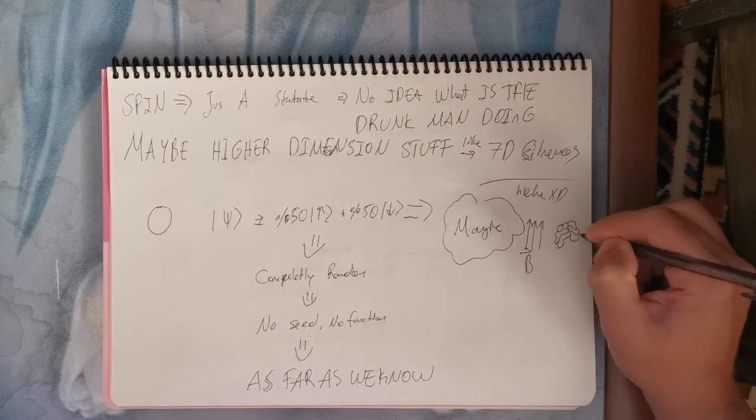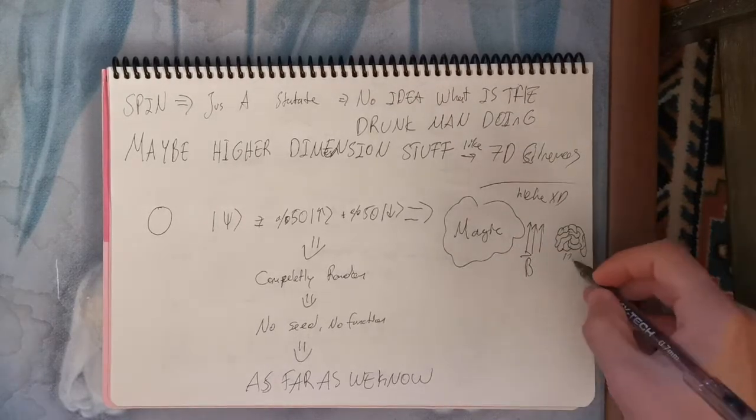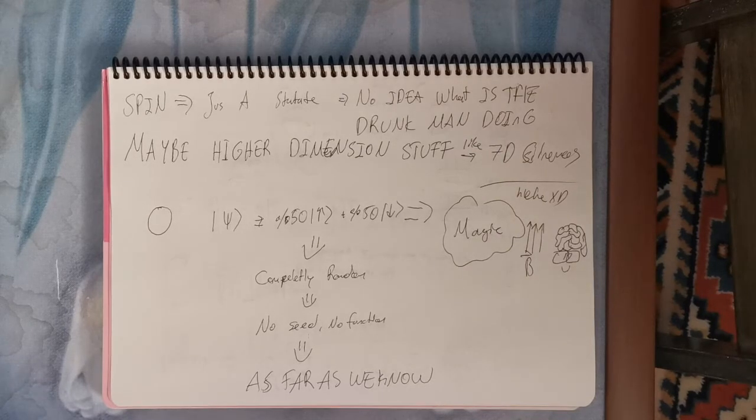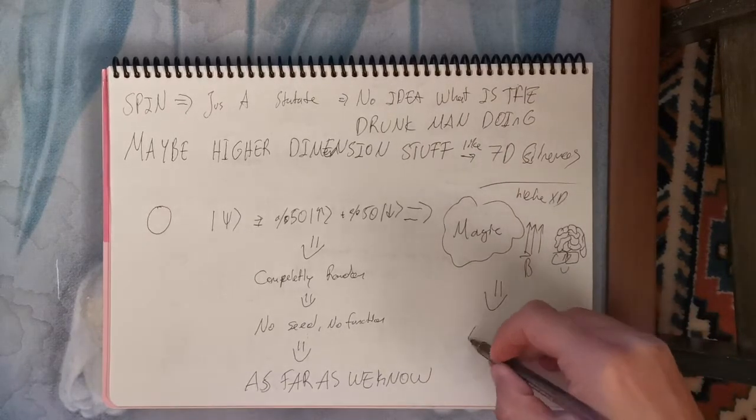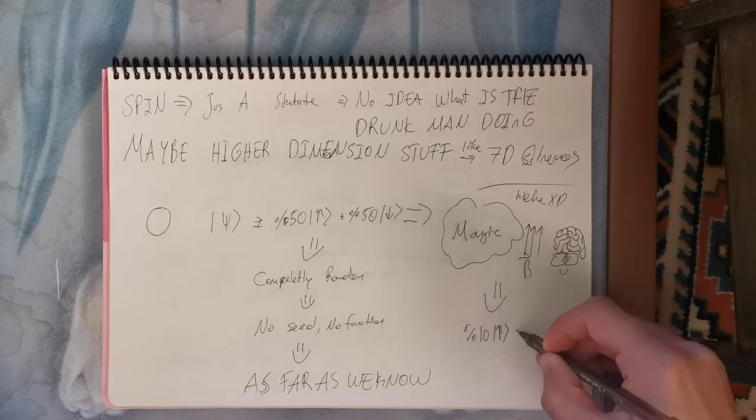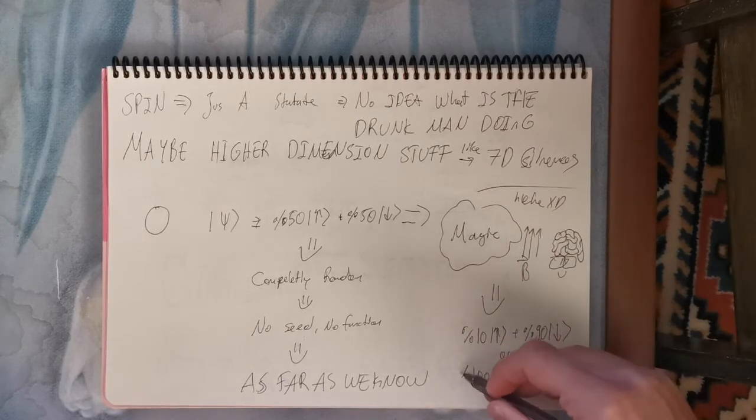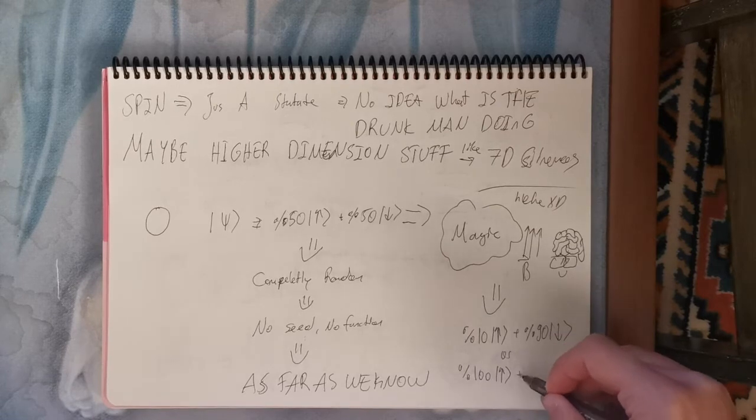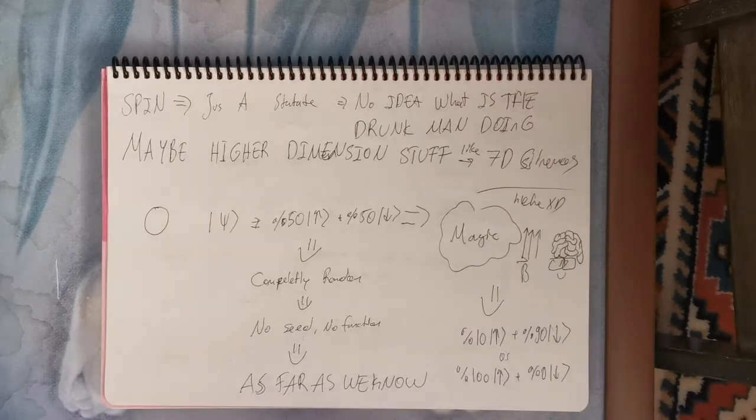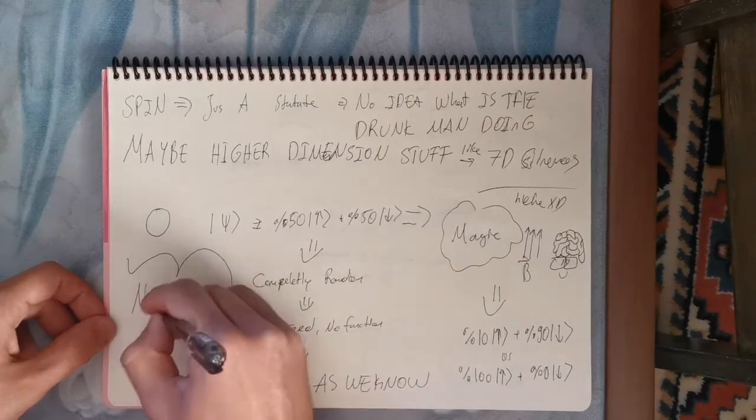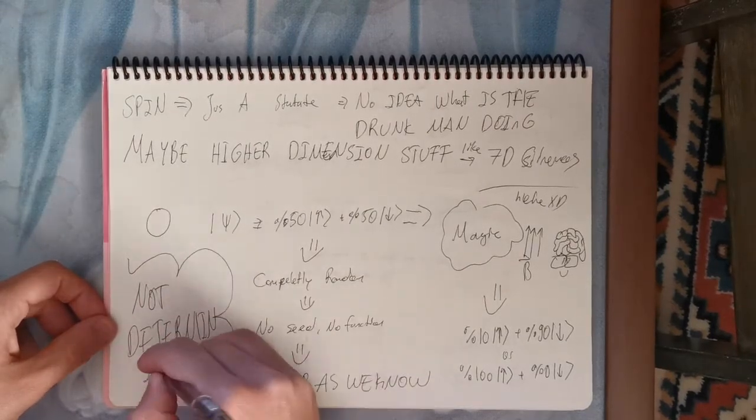The power of magic, electric fields, and smart humans, we can manipulate those probabilities of states. For example, we can make the particle 10% up and 90% down, or even 100% up and 0% down. So that will make us certain which state is the quantum particle. But all of this is not deterministic, which leaves room for free will.